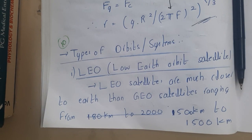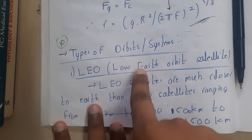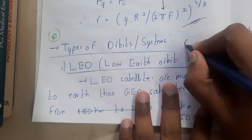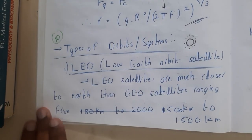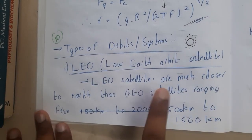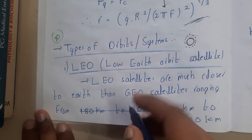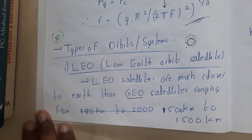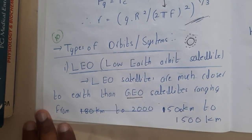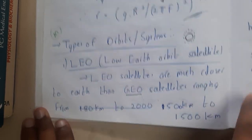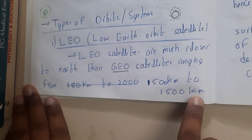So let us start with LEO. From the name itself you can say it is a Low Earth Orbit satellite, so it is somewhat closer to the earth. LEO satellites are much closer to the earth than GEO satellites. These are the most closest satellites, in simple words.